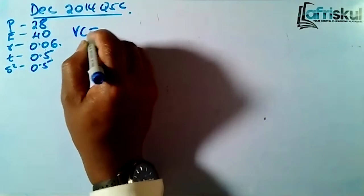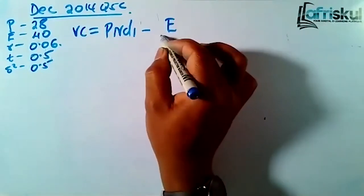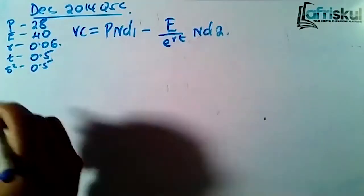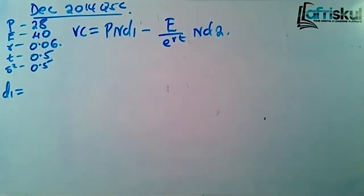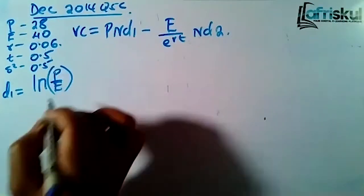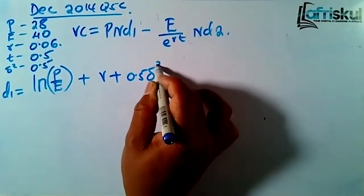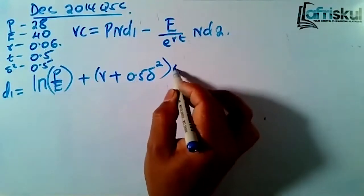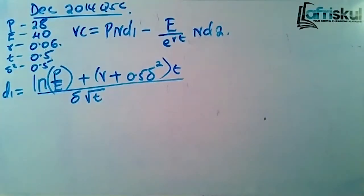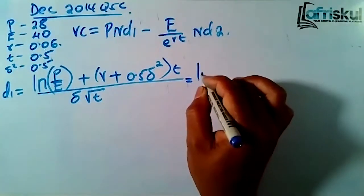The value of the call is P times N(d1) minus the exercise price divided by e^(rt) times N(d2). Where d1 equals the natural log of the market price over the exercise price, plus the risk-free rate plus half times the variance, multiplied by T, all divided by the standard deviation times the square root of T.